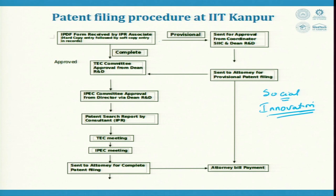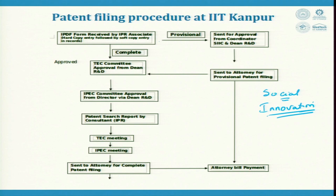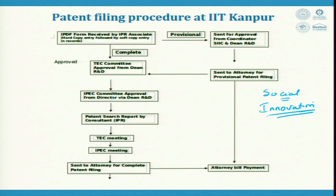If it is a complete patent — claims are ready, model is ready, demonstration is ready — then the completed form goes to a committee. This committee examines the format, patenting rights, and industrial application of the patent, then gives a recommendation to the dean saying the idea is worthwhile taking to the next step. The IPC committee approves it, then approval from the director via the dean is obtained, and it goes for a patent search report by a consultant.